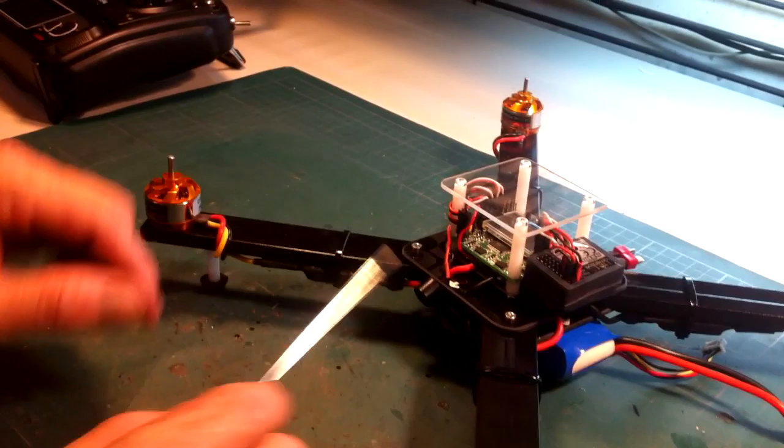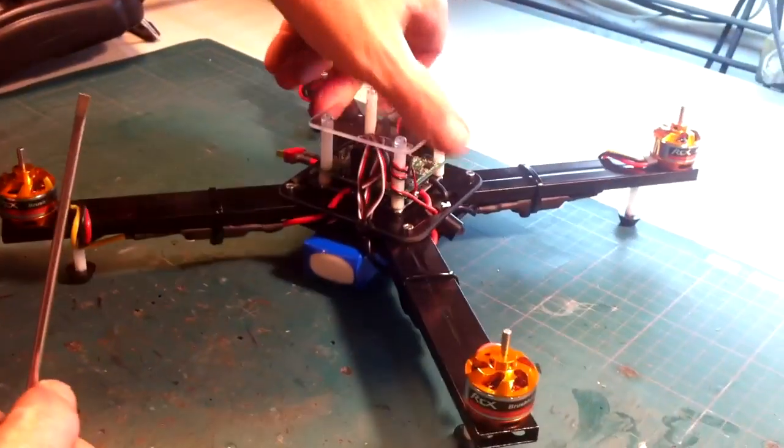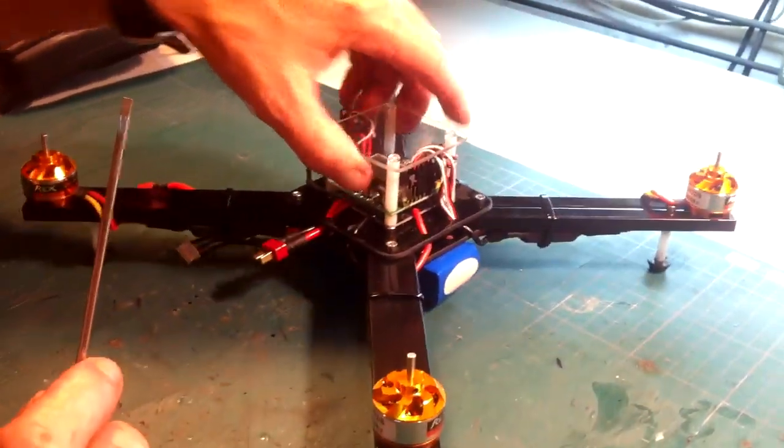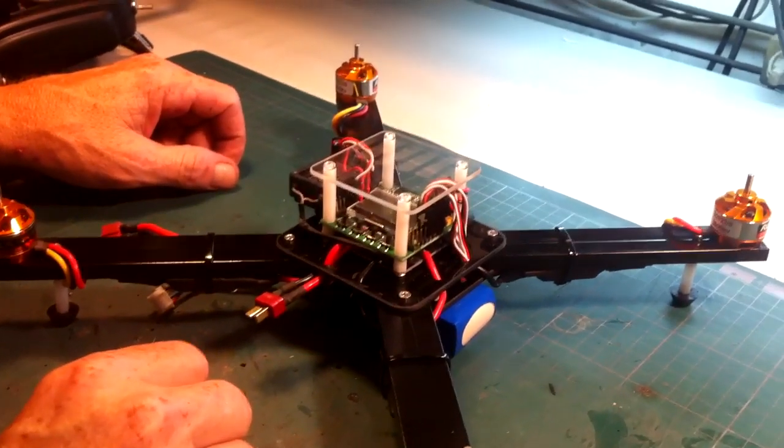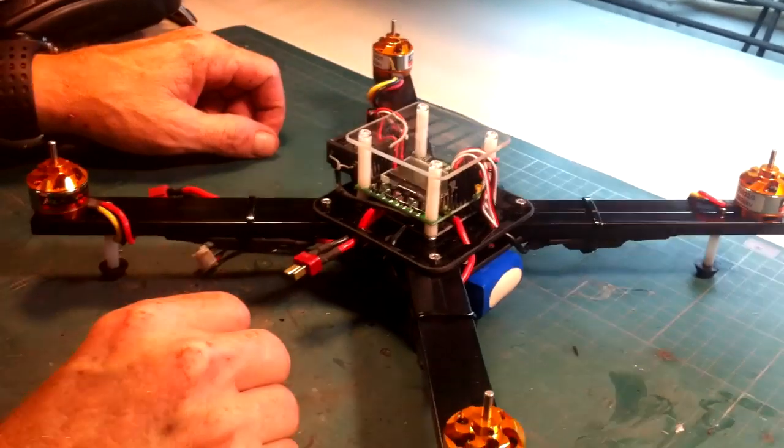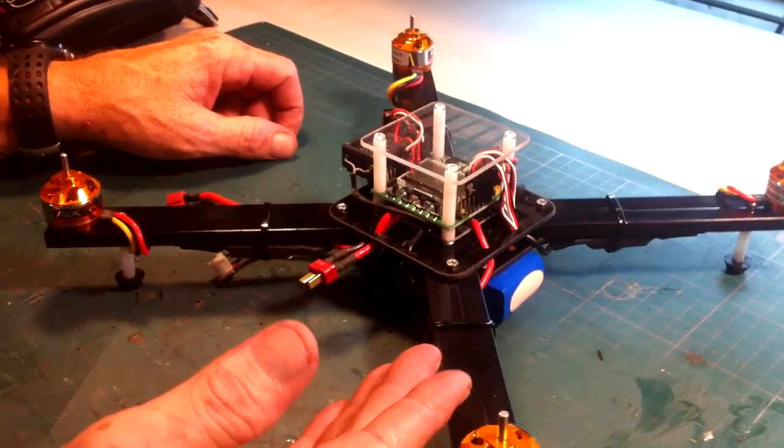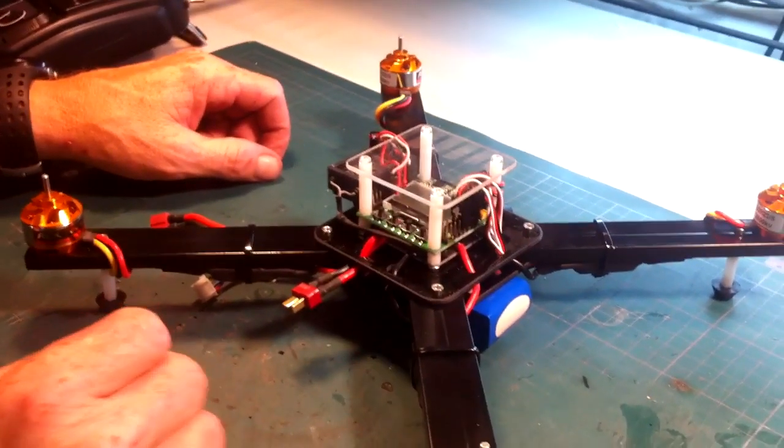So all we got left to do now is calibrate the ESCs and check for motor rotation. So we're going to first calibrate the ESCs, once the ESCs are calibrated then we're going to check for motor rotation.